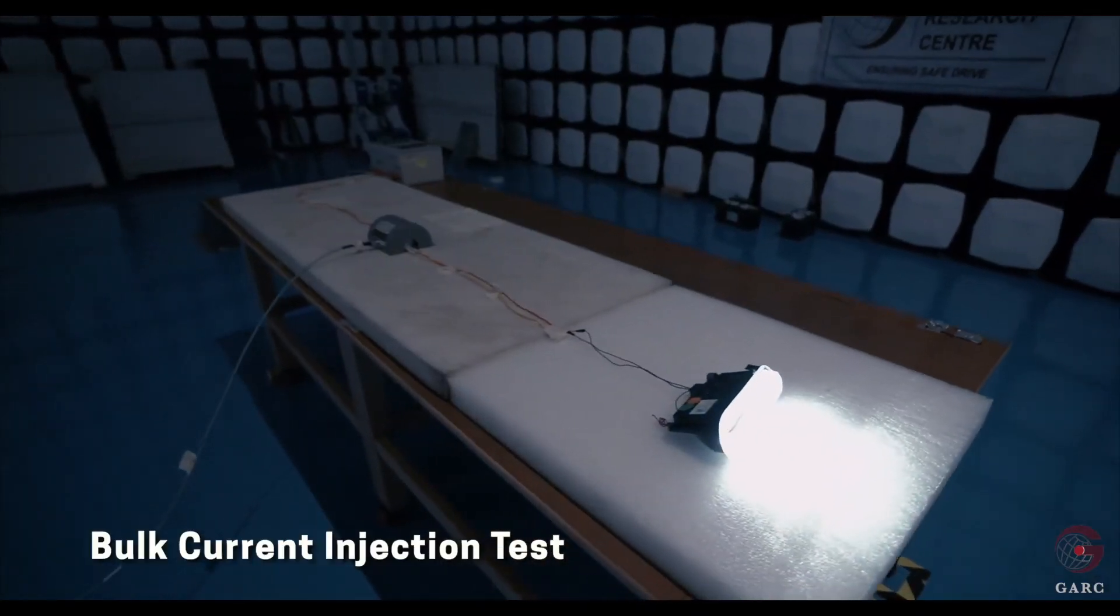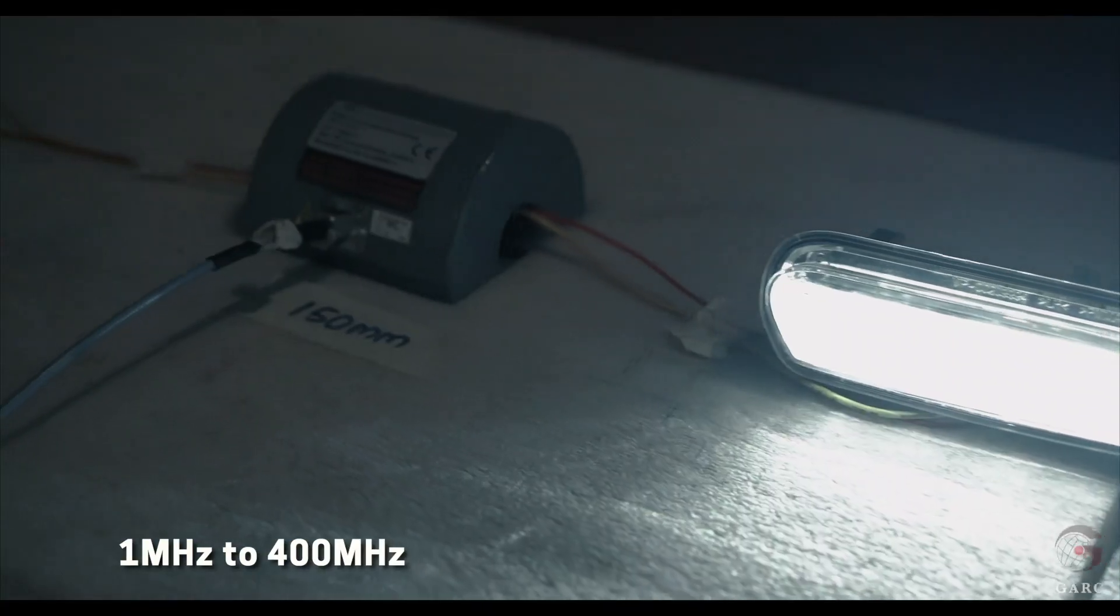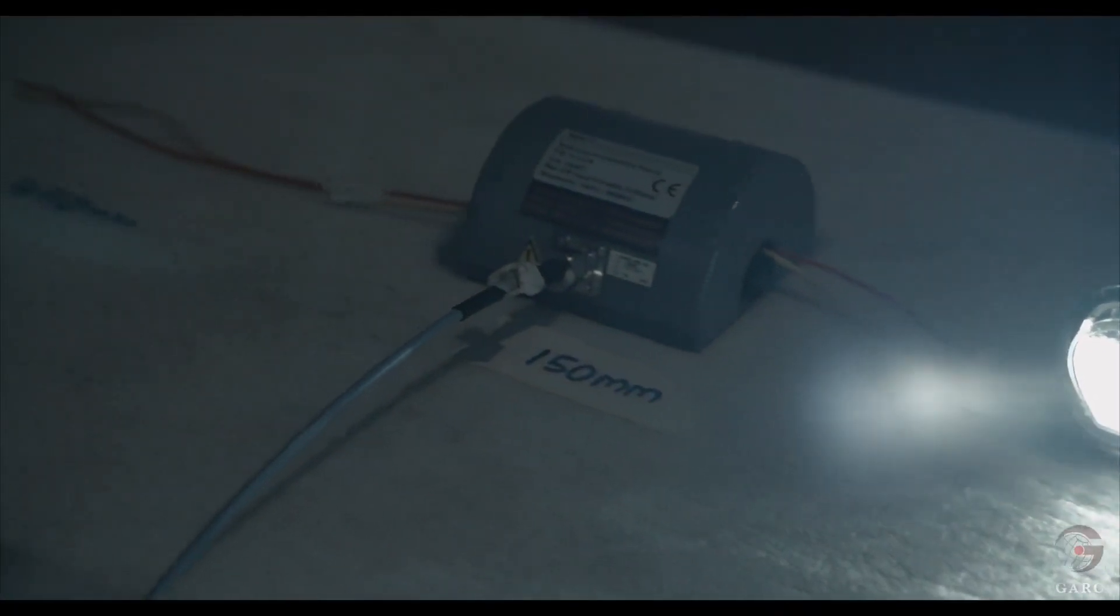The bulk current injection test facility can perform from 1 megahertz to 400 megahertz using current probe with max current 300 milliampere and from 400 megahertz to 3 gigahertz using TWC.